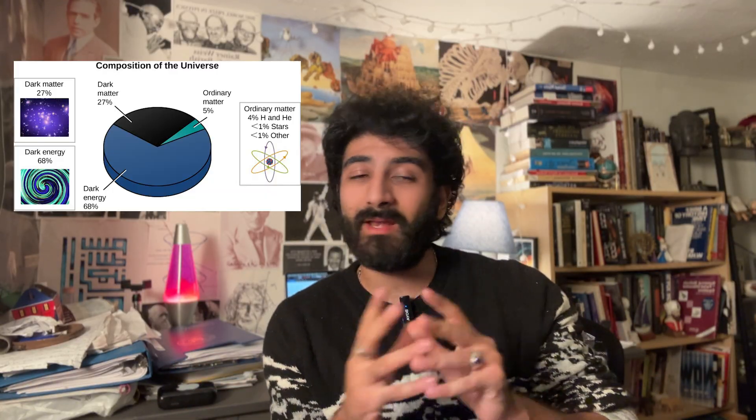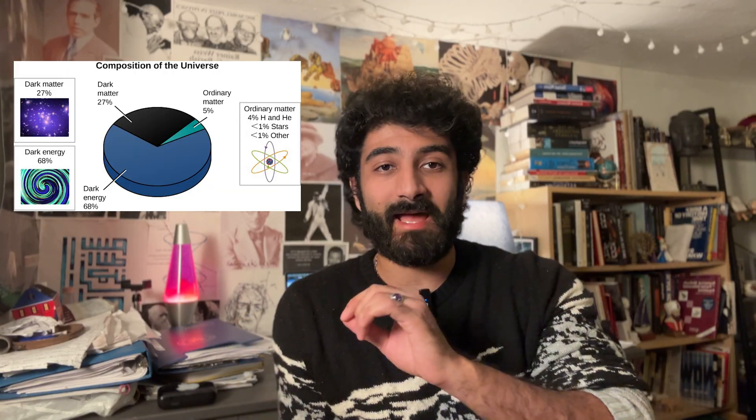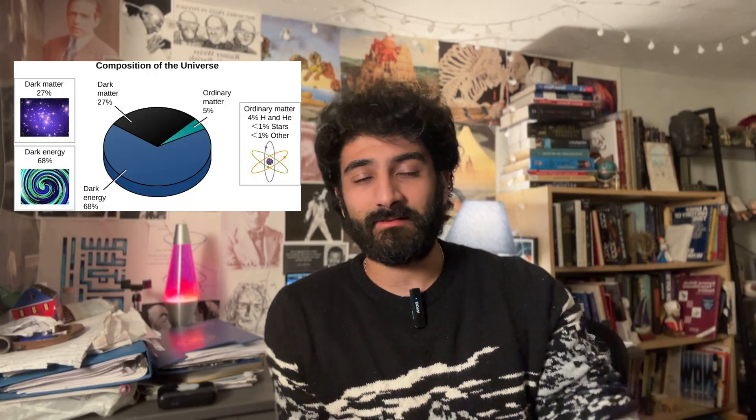Dark matter makes up about 27% of the entire universe, as we only know and understand 5% of the visible universe, with the rest being dark energy. The real test for this paper is making theoretical predictions using Einstein's theory of general relativity to understand how hints of dark matter could appear within the data if they were ever observed.